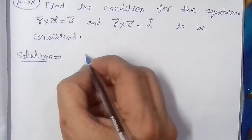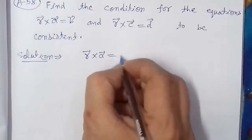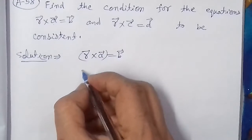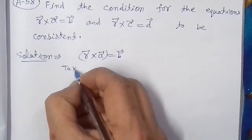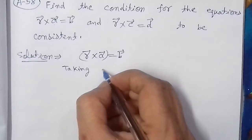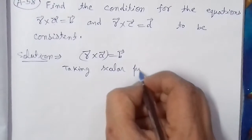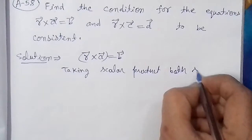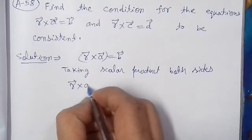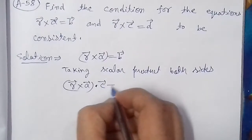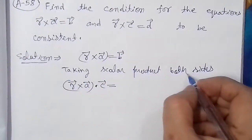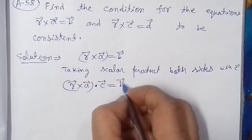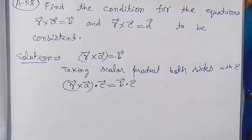इसके लिए पहला equation दे रखा है: R⃗ × A⃗ = B⃗। इसमें हम C⃗ से dot product (scalar product) लेते हैं — taking scalar product both sides with C⃗। तो left hand side में (R⃗ × A⃗) · C⃗ हो जाएगा, और right hand side में B⃗ · C⃗।